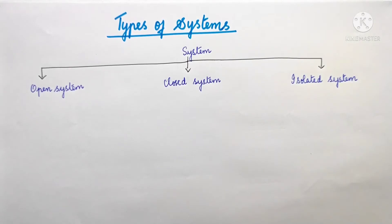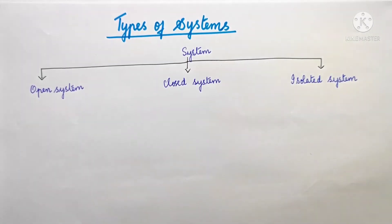Now we will talk about these three different types of systems. First, open system.